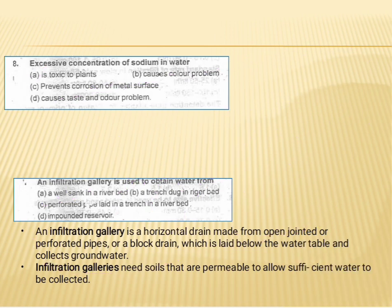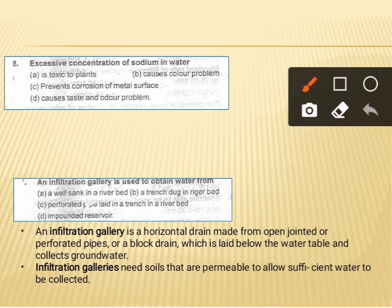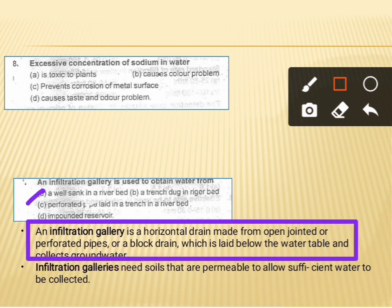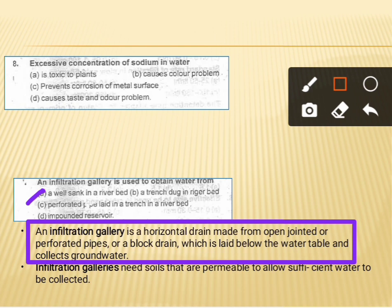The next question says that an infiltration gallery is used to obtain water from what source. The correct answer is option A. An infiltration gallery is a horizontal drain made of open-jointed or perforated pipes or block drain, which is laid below the water table to collect groundwater. The infiltration gallery has a horizontal drain with perforated pipes and must be permeable in nature.